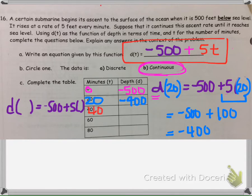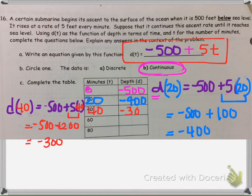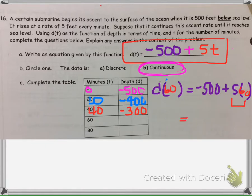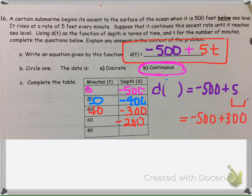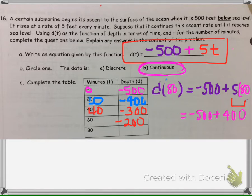At 40 minutes: 5 times 40 is 200, and negative 500 plus 200 is negative 300. So the submarine at 40 minutes is 300 feet below sea level. When we plug in 60, we get negative 200 feet. And when we plug in 80, the depth at 80 minutes is negative 100 feet below sea level.